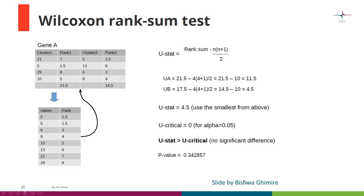Here is a slide to remind you how the Wilcoxon Rank-Sum test works. In our example we have one gene, gene A, and two clusters — cluster 1 and cluster 2 — each with four cells. We take the expression values from both clusters, put them in a table in increasing order, and give them rank values. The first two are the same, a tied situation, so instead of ranks 1 and 2, we put 1.5 for each. We then replace the original expression values with rank values and calculate the sum of rank values for cluster 1 and cluster 2.